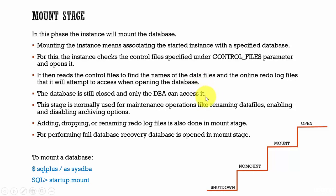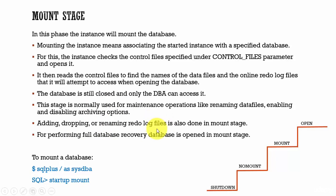The database administrator puts the database in a mount stage to perform maintenance operations like renaming data files, and enabling or disabling archiving options. That means if you have to put the database in archive log mode or no-archive log mode, you have to put the database in a mount stage. We also need the mount stage whenever we have to add, drop, or rename redo log files. Another important use case is whenever we have to perform a full database recovery. To start the database in mount stage, issue the command startup mount.